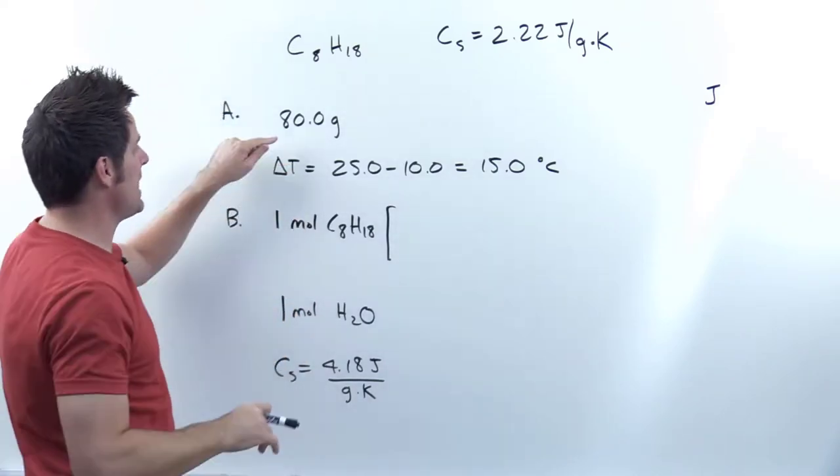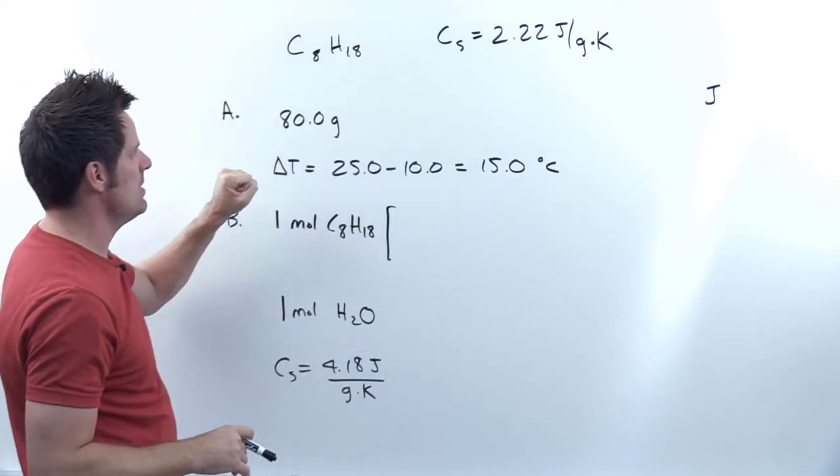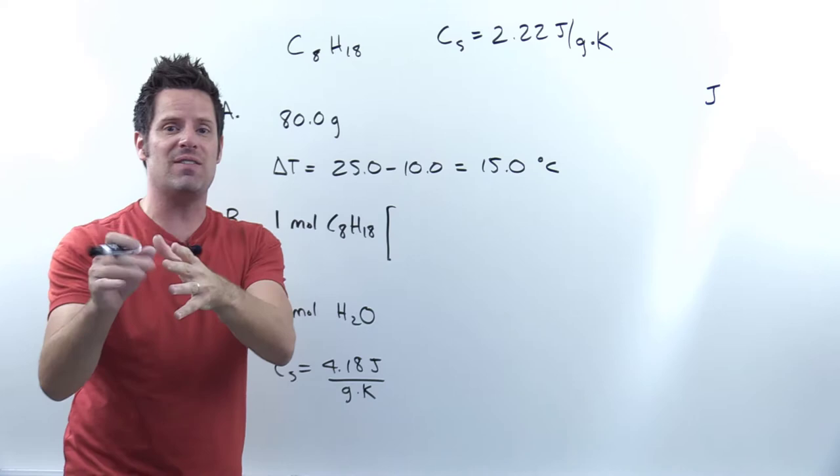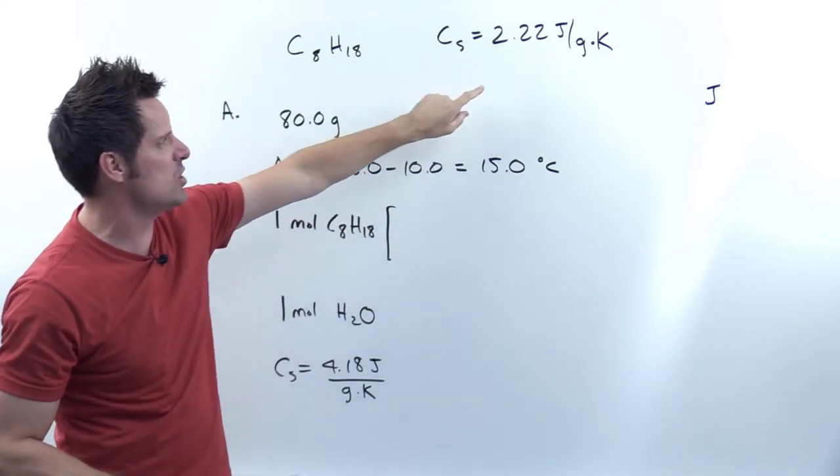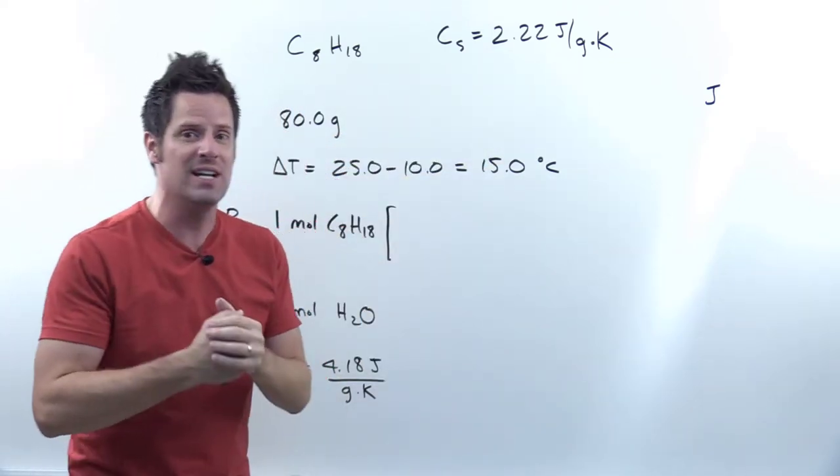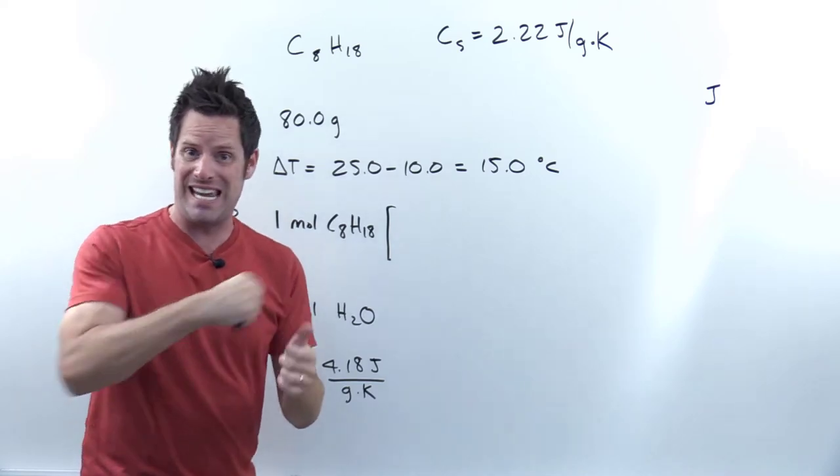Well, in my typical fashion, we're going to start by writing down our 80 grams of octane right here, and then we're going to use the values we've been given, in this case, the specific heat of octane in units of joules per gram Kelvin.